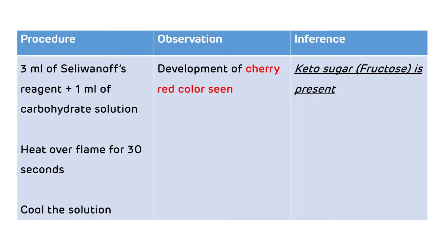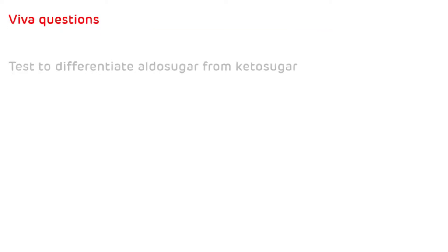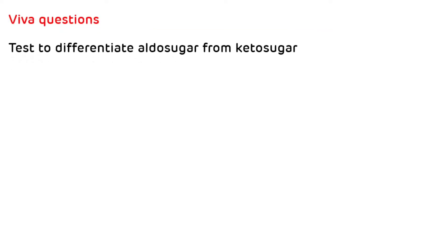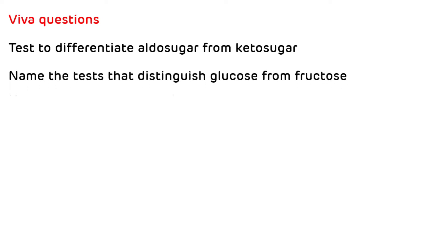Viva questions. First: Selivinov's test is done to differentiate aldo sugar from keto sugar. Second: Selivinov's test distinguishes glucose from fructose — fructose gives a positive Selivinov's test, while glucose does not because glucose is an aldo sugar.